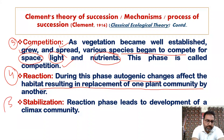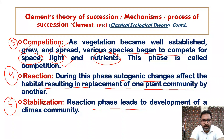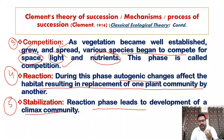The fifth important step in the process of ecological succession is stabilization. The reaction phase leads to the development of a climax community. As we studied in part one, the climax community is a stable community in equilibrium. This reaction phase leads to the development of that climax community.